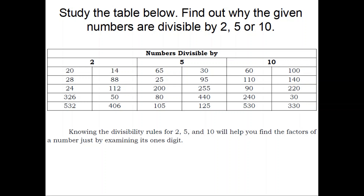Numbers divisible by 2 are: 20, 28, 24, 326, 532, 14, 88, 112, 50, and 406. Numbers divisible by 5 are: 65, 25, 200, 80, 105, 30, 95, 255, 440, and 125.